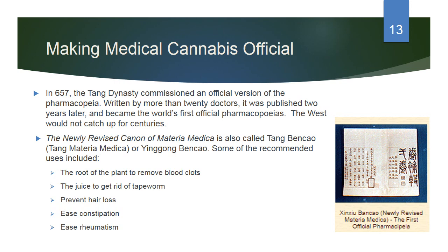In 657 AD, the Tang Dynasty commissioned an official version of the pharmacopeia written by more than twenty doctors and published two years later. It became the world's first official pharmacopeia — the West would not catch up for centuries. The newly revised canon, called the Tang Bencao or Tang Materia Medica, recommended uses including: the root of the plant to help remove blood clots, the juice to get rid of tapeworm and prevent hair loss, and to ease constipation and rheumatism. Despite lacking modern technology, they identified specific things cannabis could be used for to benefit patients.